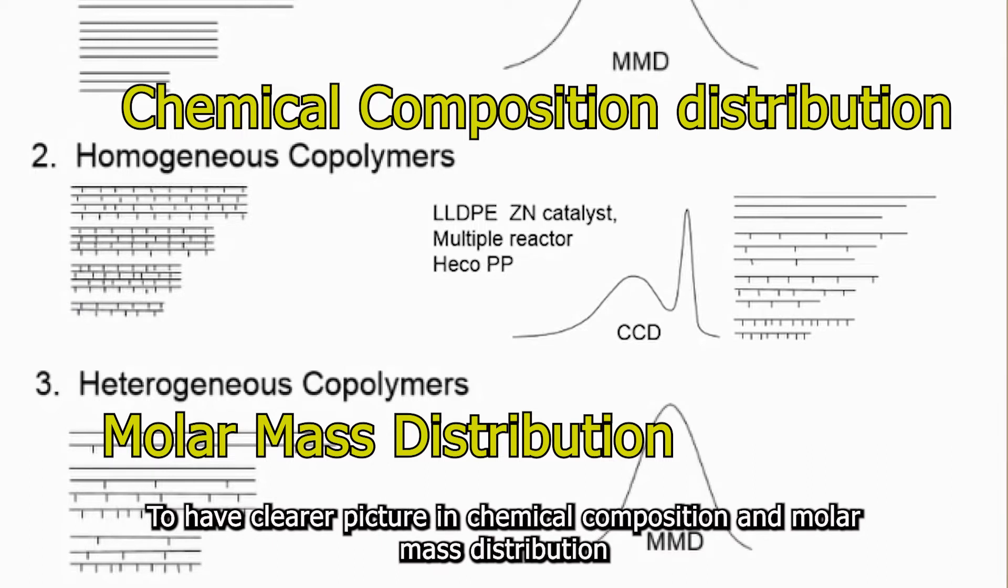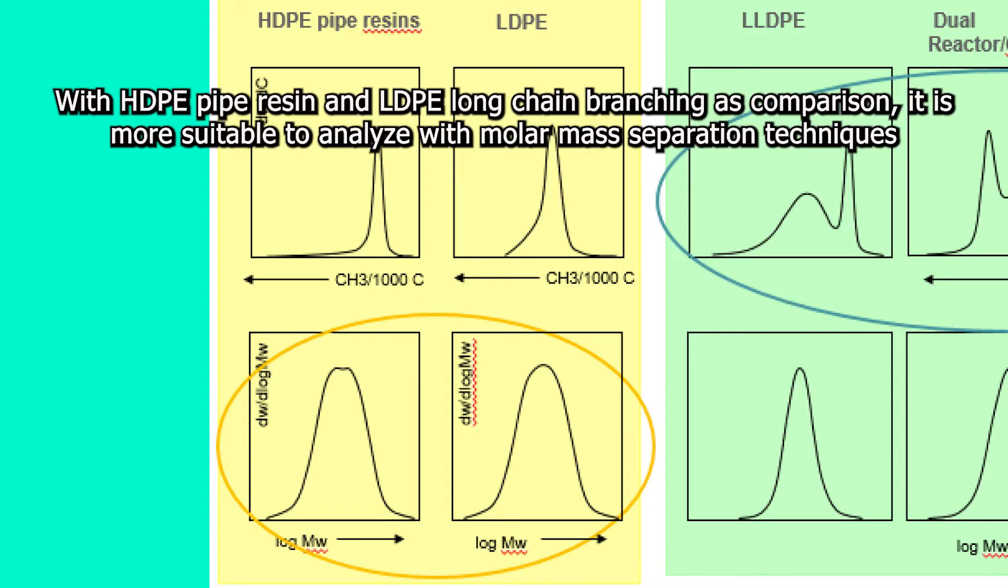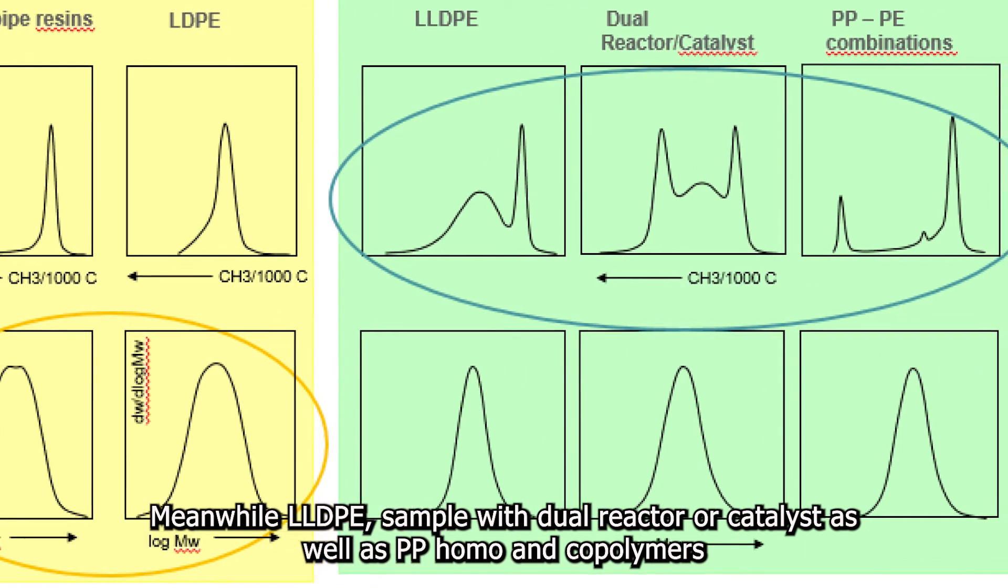In chemical composition and molar mass distribution, we can illustrate in this diagram with HDPE pipe resin and LDPE long chain branching as comparison. It is more suitable to analyze with molar mass separation techniques.